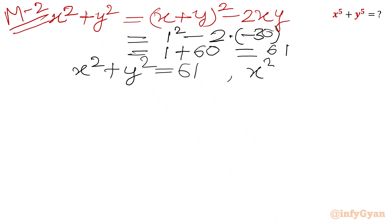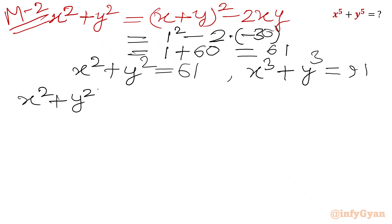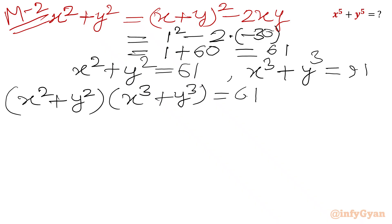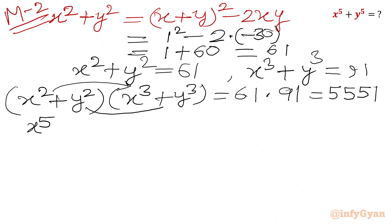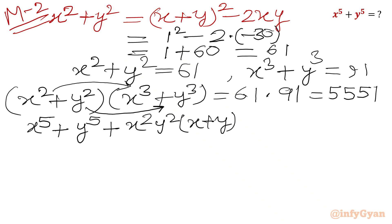We know from equation 1 that x³ + y³ = 91. Now multiply (x² + y²)(x³ + y³) = 61 × 91 = 5551. Expanding the left side: x⁵ + y⁵ + x³y² + x²y³ = 5551. Factoring the last two terms: x⁵ + y⁵ + x²y²(x + y) = 5551.